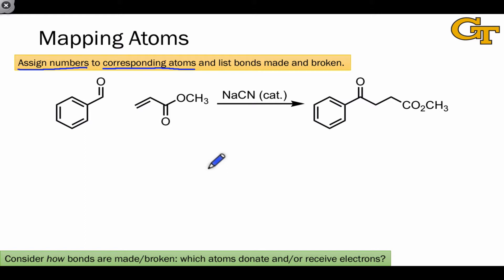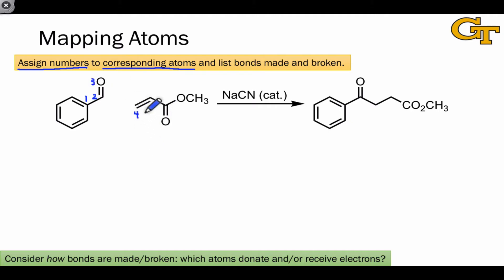You really only need to map atoms where chemical change is occurring, although it can often help to map atoms in the vicinity of where changes are occurring as well. In this reaction, we could start with the aldehyde and map three key atoms: one, two, and three. Then move to the other reaction partner and map its key atoms: four, five, six, and seven — just to map that last oxygen.